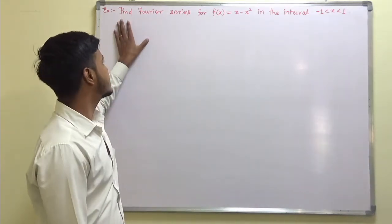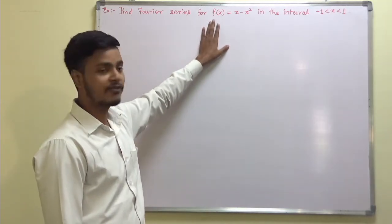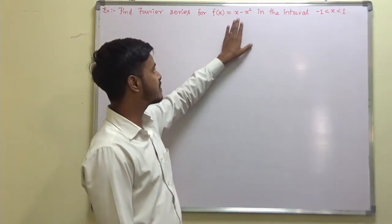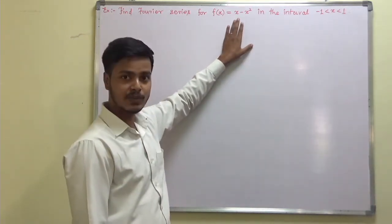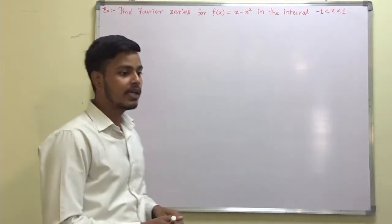This problem says: find the Fourier series for f(x) = x − x² in the interval −1 to 1.